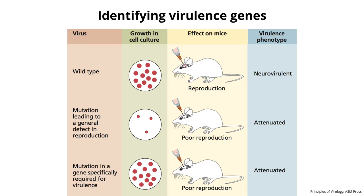On the bottom of that diagram: a virus with a mutation in a gene that doesn't affect replication in cell culture, but when you put it in the mouse, it is attenuated. That's the important concept — we want genes specifically needed in the animal, not genes needed for general replication. If you're thinking immune antagonism genes, you're on the right track, because in cell culture there's no adaptive immune response, so any genes needed to antagonize that wouldn't be needed in cell culture.